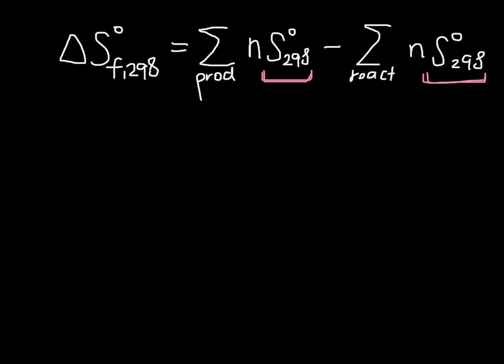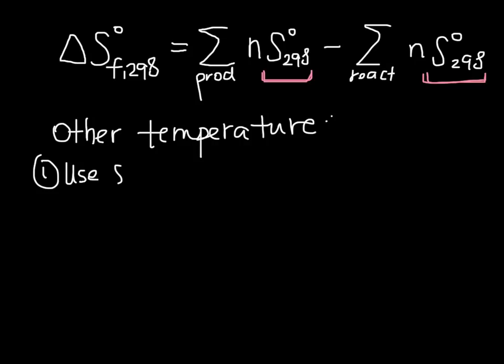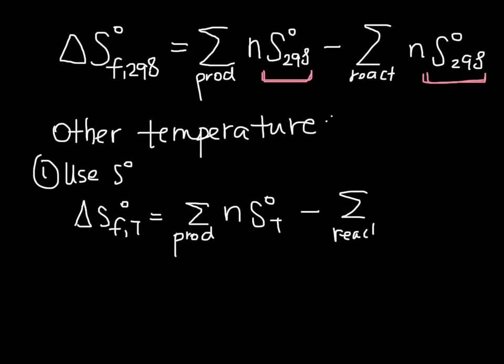Now we might be interested in doing this at a different temperature, though, because you'll notice that this is only for 298. And there are actually two different approaches that we can use to find this at another temperature. So the first way that we could do that is by using the absolute entropy data, because not only is this tabulated at 298, but some data sources also have it at different temperatures. So we can basically do that same expression. So delta Sf at a different temperature is the sum of the products of n times the absolute entropy at the temperature of interest minus the sum for the reactants of n times the absolute entropies at the temperature of interest.